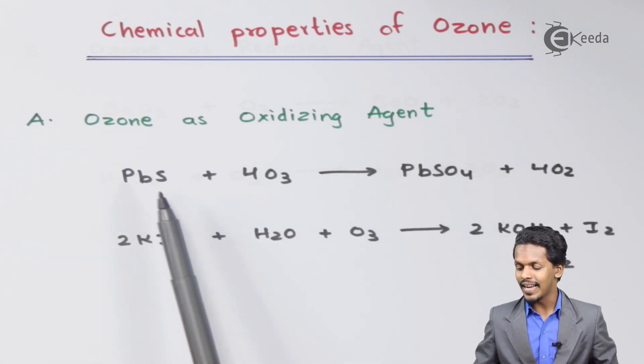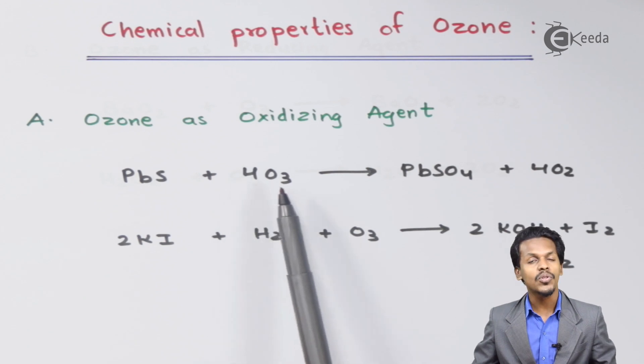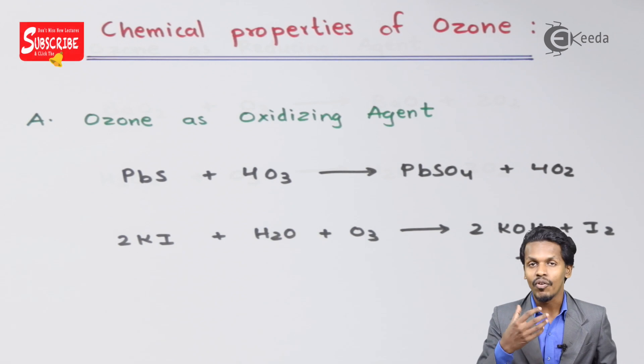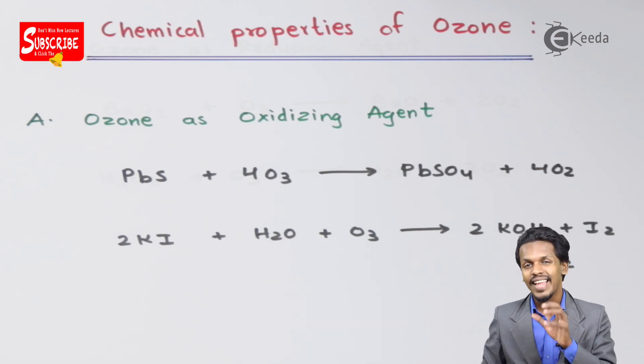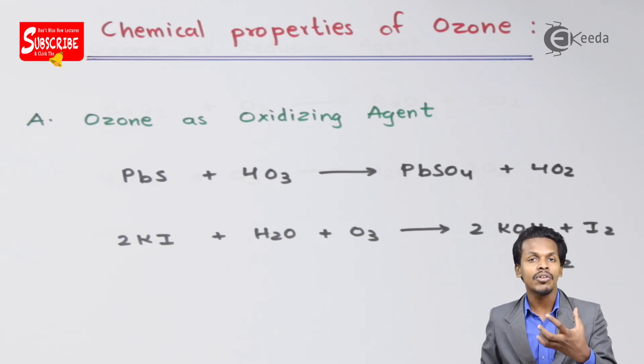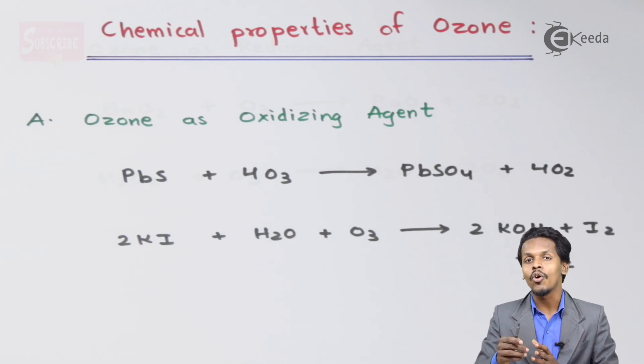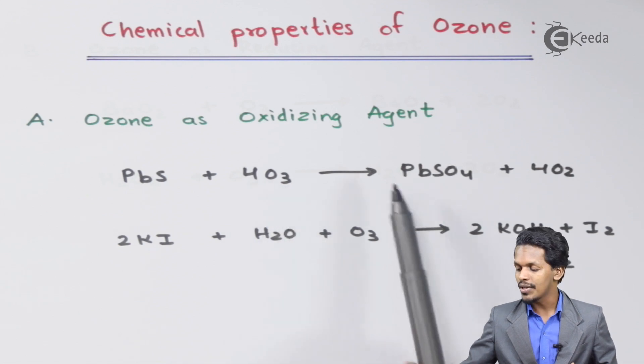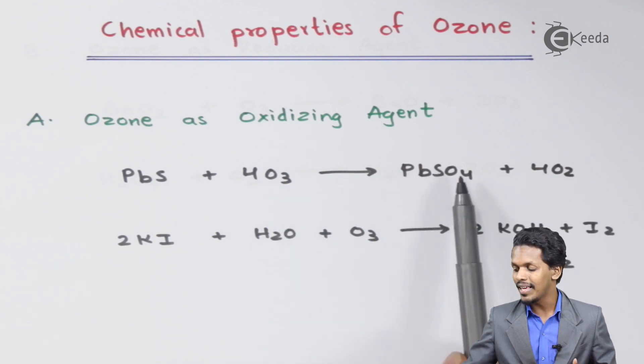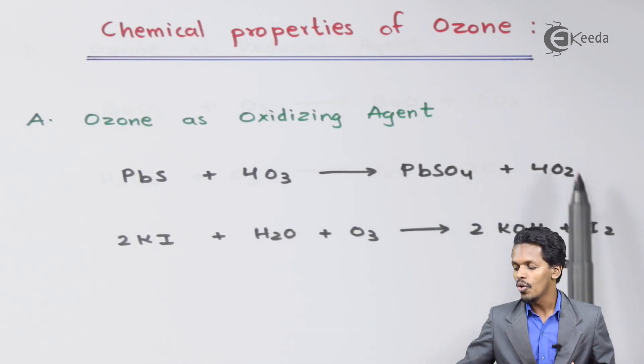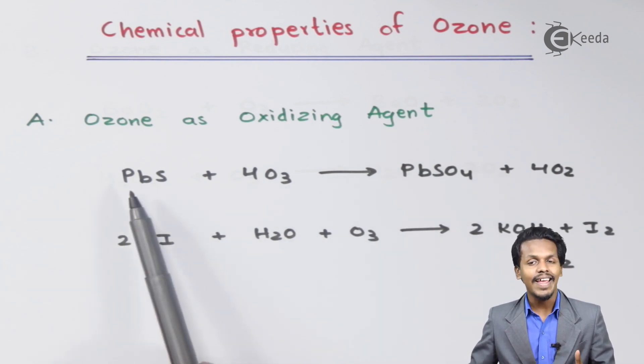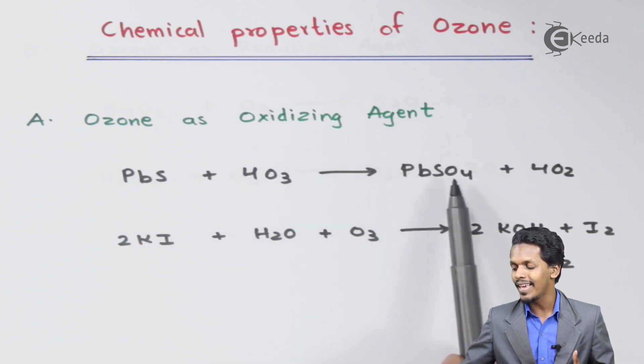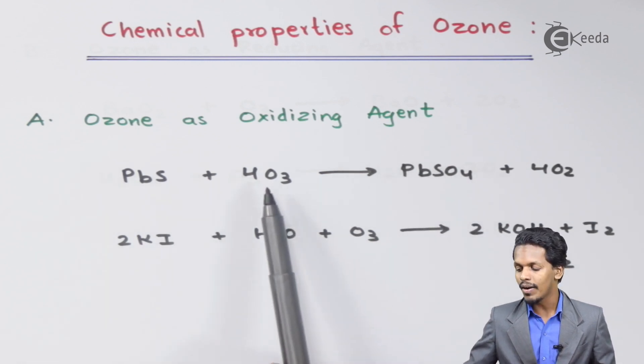Suppose we have PbS and we are reacting it with four moles of O3. In this case, O3 decomposes into oxygen and forms nascent oxygen atoms, and because of that nascent oxygen atom, the reaction proceeds. PbS reacts with four moles of O3 to obtain PbSO4 along with four moles of O2. The lead sulfide has been oxidized to PbSO4, making O3 an oxidizing agent.